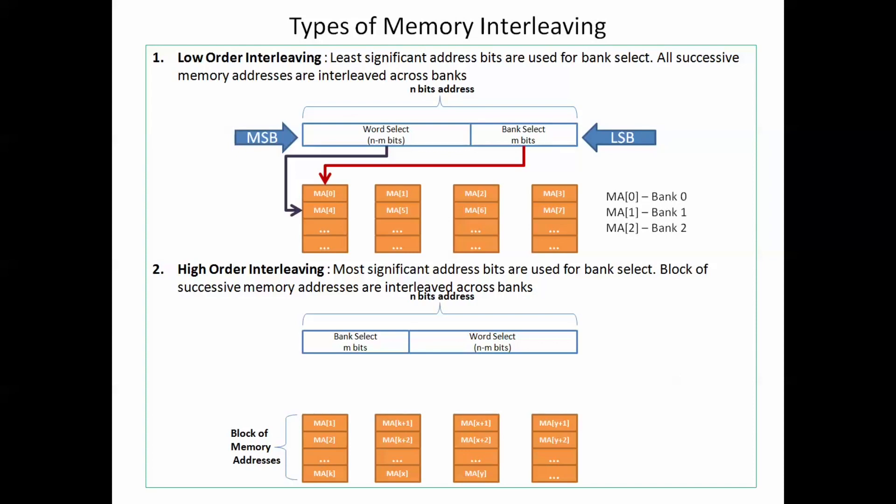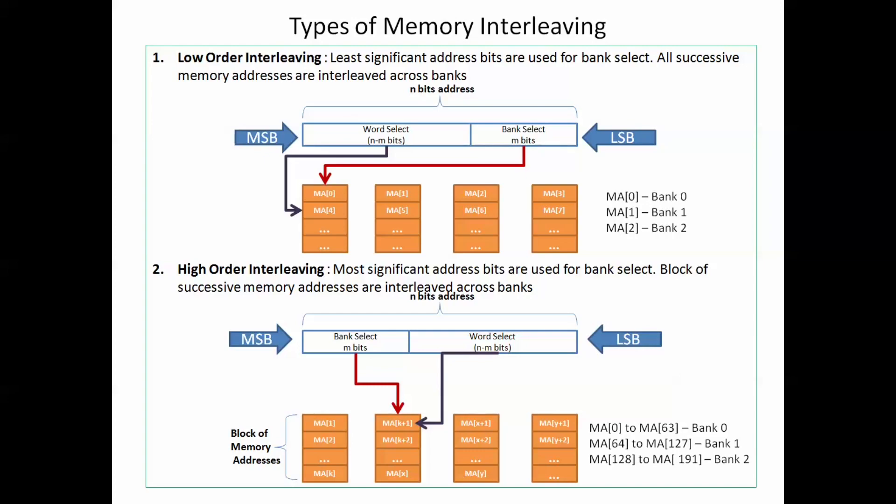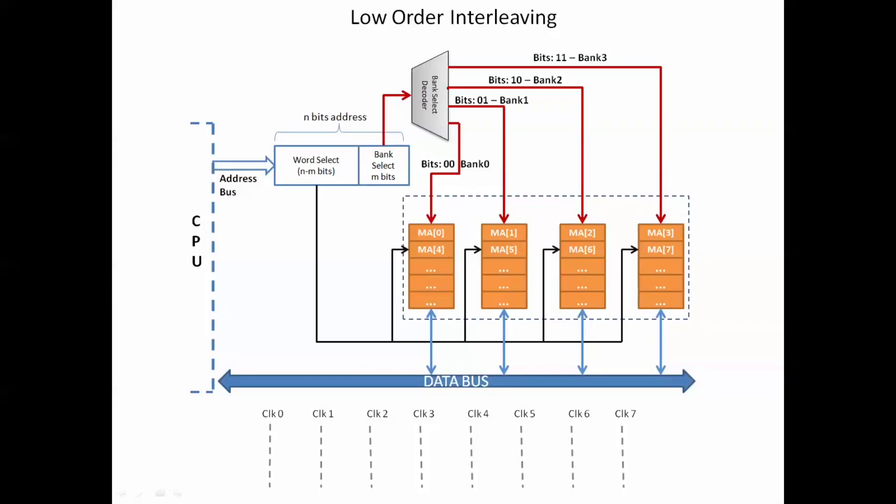However, in high-order interleaving, the most significant bits of the address are used to select the bank, and low-order bits are used to select the word in the selected bank. In this type of interleaving, blocks of successive memory addresses are interleaved across banks. Now let's look at the types in detail with the help of an example.